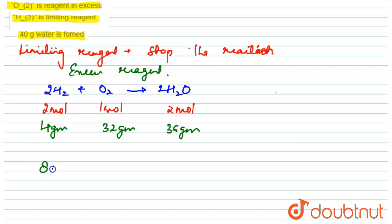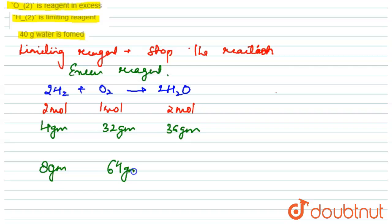In this question, 8 grams of H₂ reacts with 32 grams of O₂. From the balanced chemical equation, if 4 grams of H₂ reacts with 32 grams of O₂, then 8 grams of H₂ would require 64 grams of O₂ to form H₂O. But in this question, only 32 grams of O₂ is given.